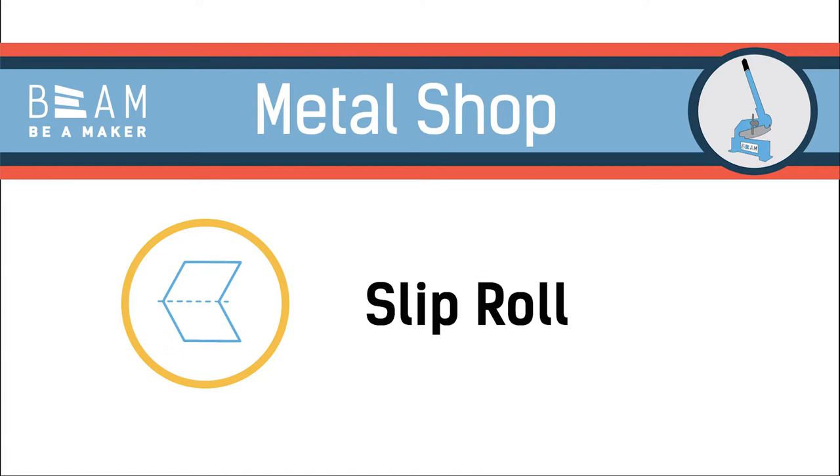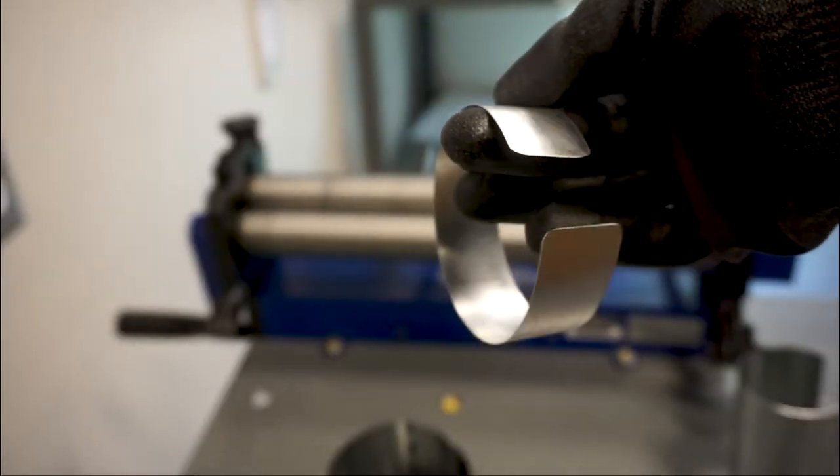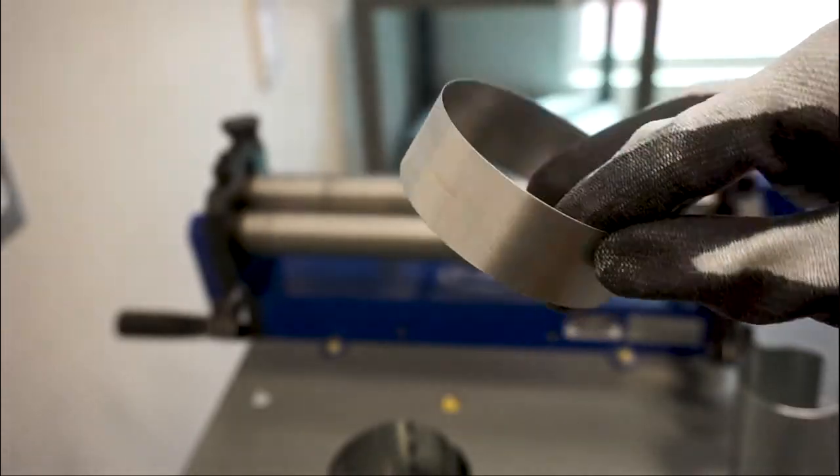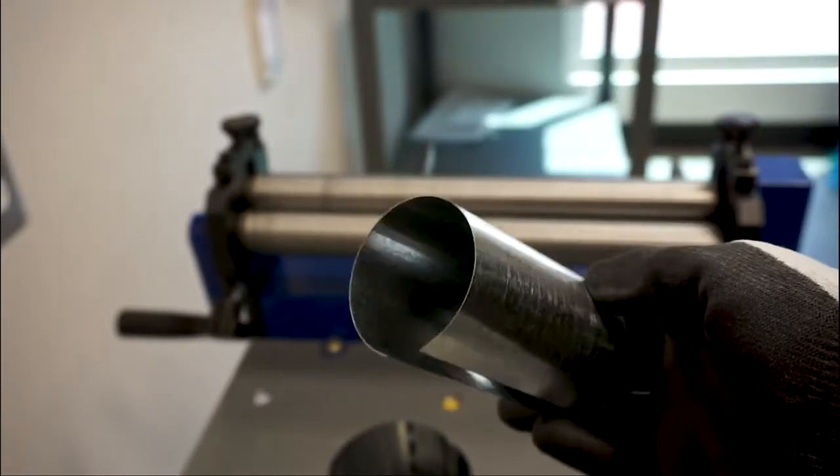This video covers using the manual slip roll in the metal shop located at BEAM in Murray. The slip roll can be used to bend sheet metal into cylindrical or conical shapes with a minimum diameter of 2 inches.